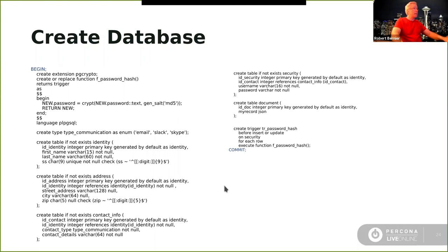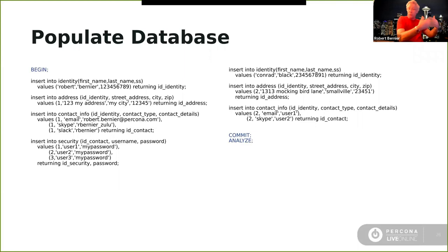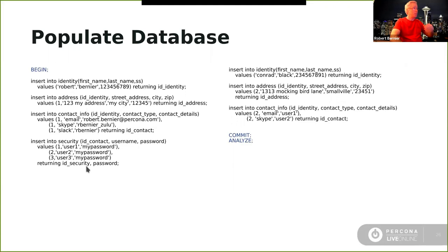Here are our four relational tables with constraints — very traditional. We're going to convert this into a proper JSON document. We insert two records: identity, address, contact info for each record. For the security table, we insert username/password pairs — the password is in the clear as `my_password` and the trigger will hash it.